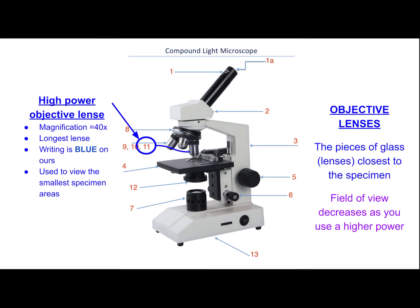The third and final objective lens — the longest one — is the high power objective lens. This lens has a magnification of 40 times. On our scopes it has blue writing. This is used to view the smallest specimen areas, or the smallest details you want to see.